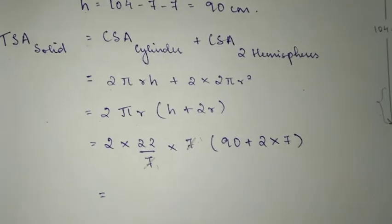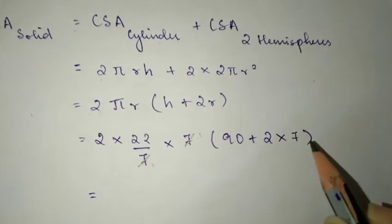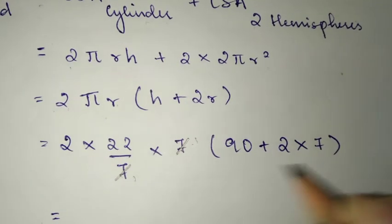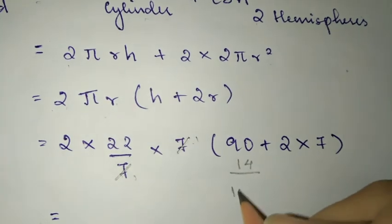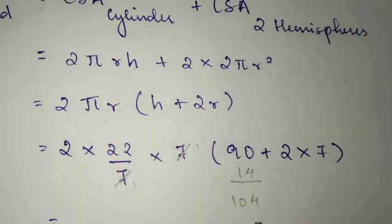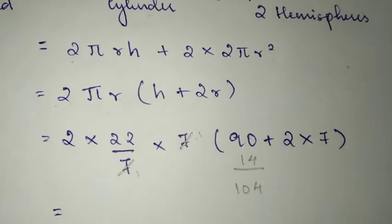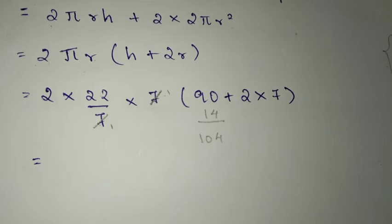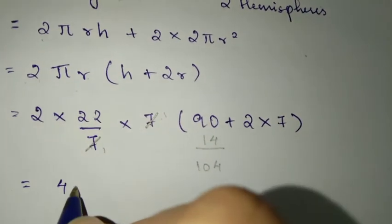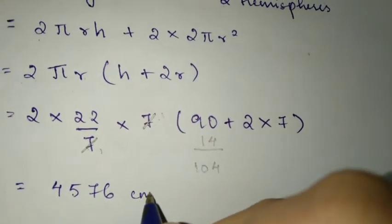After substituting, we get 2 times 22 by 7. The 7s cancel. We have to multiply 2 times 22 times 104. After multiplying the three numbers, you are going to get 4,576 centimeter square.